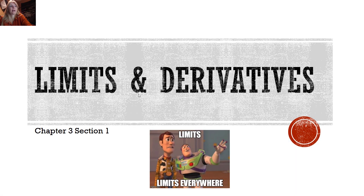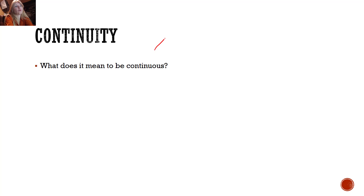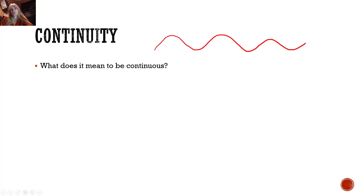Now we're going to look at how limits and derivatives go together. So what does it mean to be continuous? A lot of times in math classes they say if you can draw without picking your pencil up off the paper, then that's continuous. We like continuous functions because they're definitely the easiest to work with in calculus.